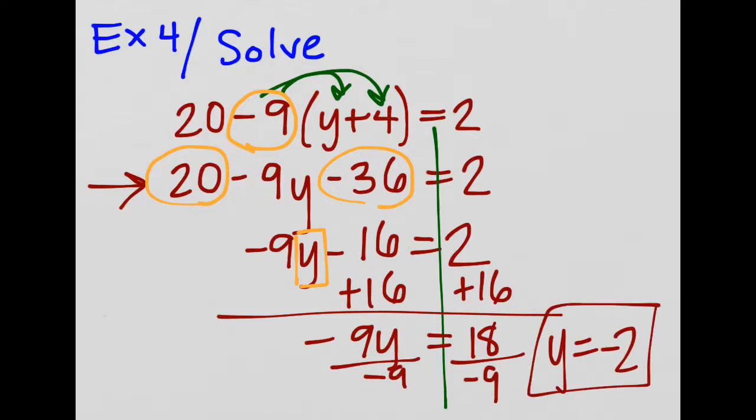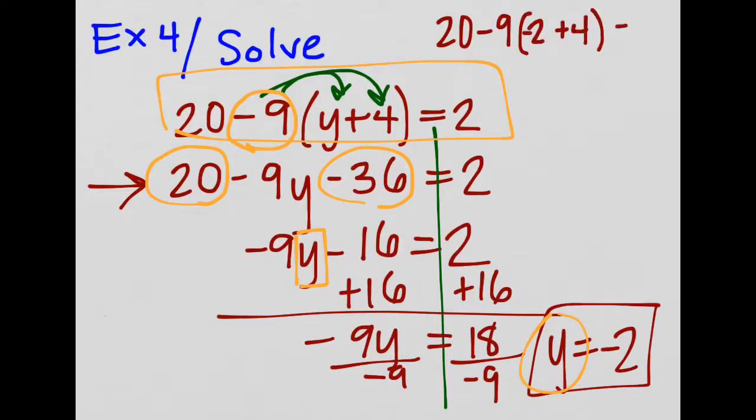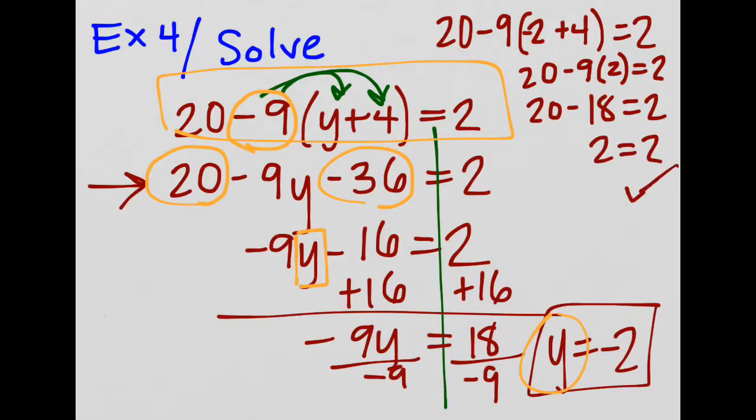Now, if you are unsure or uncertain at any point, you can come back, take this y, and plug it back into your original equation. Apply the order of operations, so we could try this. We could do 20 minus 9 times negative 2 plus 4 equals 2. If this is really what y equals, it should be a true statement. So let's see, 20 minus 9 times 2. Make sure you do multiplication before subtraction, order of operations. So 2 equals 2. Check, that's correct. You don't have to do that, but that's a great way if you're not sure.